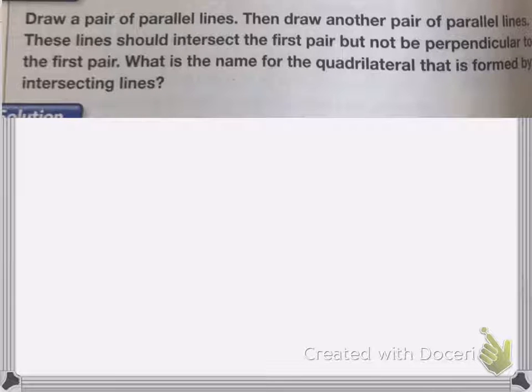On this problem, it says draw a pair of parallel lines, then draw another pair. These lines should intersect the first pair, but not be perpendicular to the first pair. What is the name for the quadrilateral that is formed by the intersecting lines? So I'll just show you how we draw that.